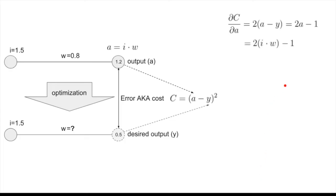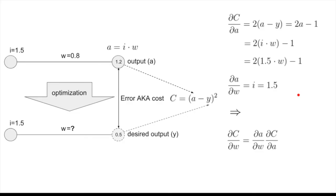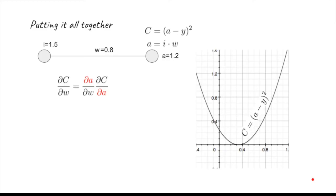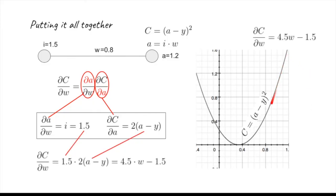Let's spell that out. The rate of change of the cost function with respect to A, with all the numbers plugged in, gives us a specific value. The rate of change of the output activation with respect to W, as we saw before, is 1.5. So the full gradient is 4.5W − 1.5. The minimum for this expression is in a different place — this is the minimum for the weight. The slope at each point tells us the direction in which we need to change the weight.